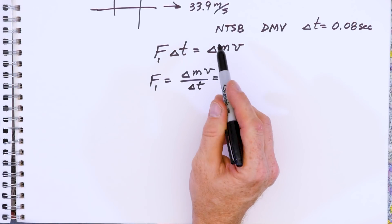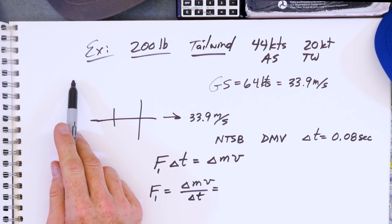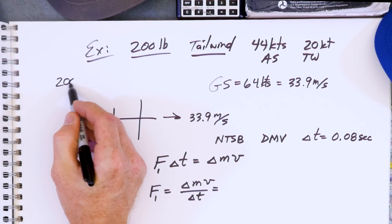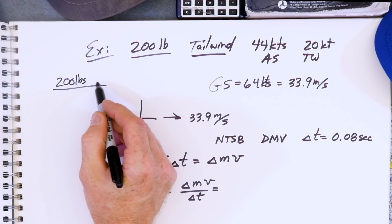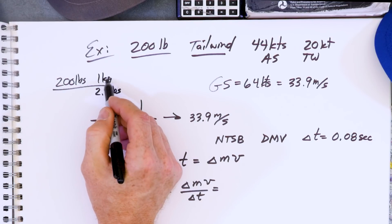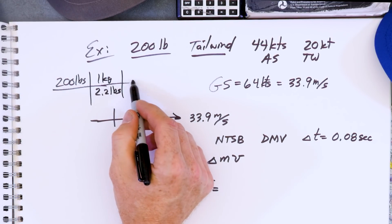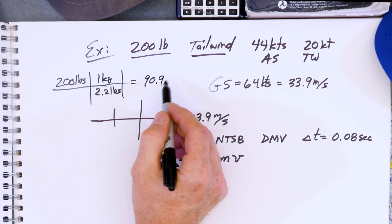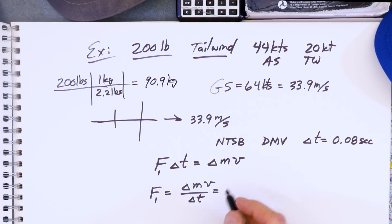The mass of our person, we need to calculate this. So let me go back up here into the margin. 200 pounds divided by 2.2 pounds in one kilogram gives us 90.9 kilograms. So we can plug this in now.